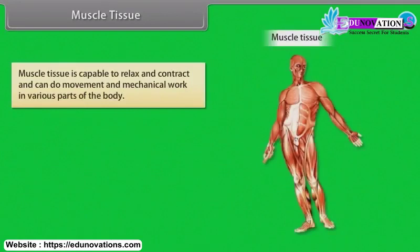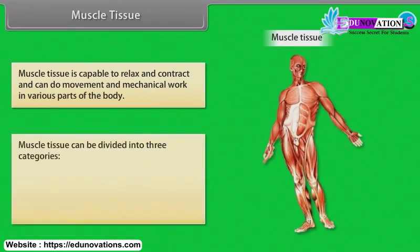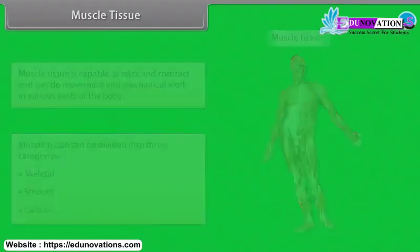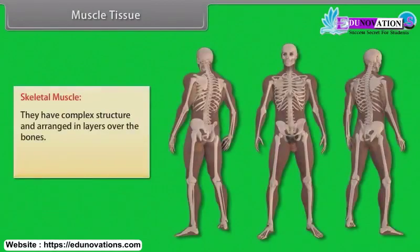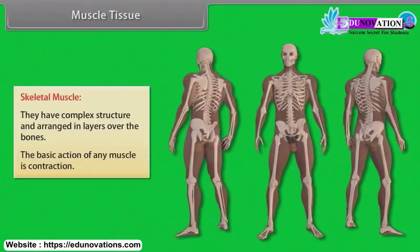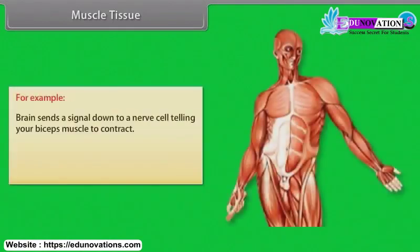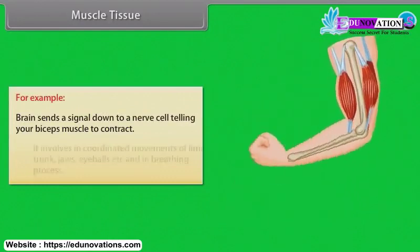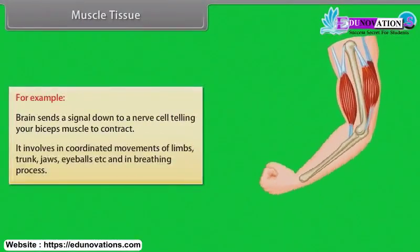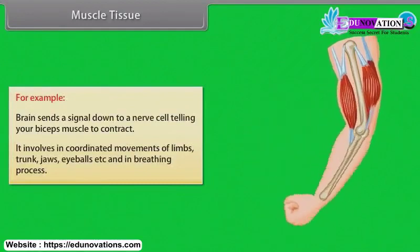Muscle tissue. Muscle tissue is capable of relaxing and contracting, and can do movement and mechanical work in various parts of the body. Muscle tissue can be divided into three categories: skeletal, smooth and cardiac. Skeletal muscles have a complex structure and are arranged in layers over the bones. The basic action of any muscle is contraction — for example, the brain sends a signal down a nerve cell telling the biceps muscle to contract. Skeletal muscle is involved in coordinated movements of limbs, trunk, jaws, eyeballs, and in the breathing process.